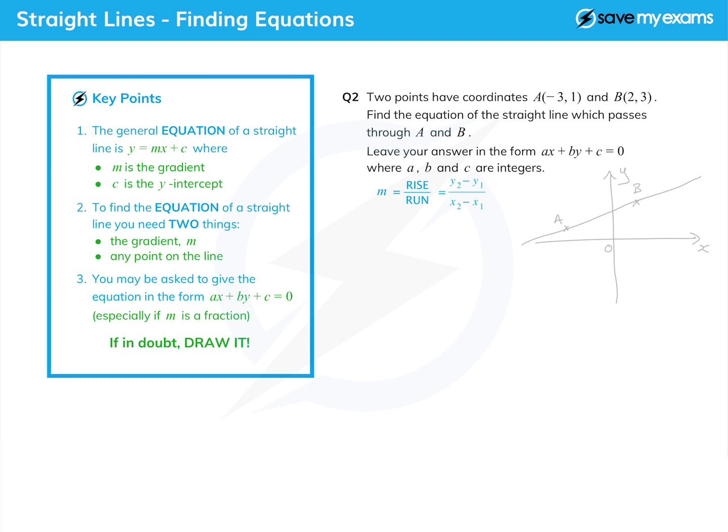Now in order to find the gradient, I've actually recreated the gradient formula here. Go and look at the coordinates tutorial if you're not too happy with that, but it's basically rise over run, or some people call it up over across, and that is, if you've got two points, it's the difference in the y coordinates over the difference in the x coordinates, and that's exactly what we've got here.